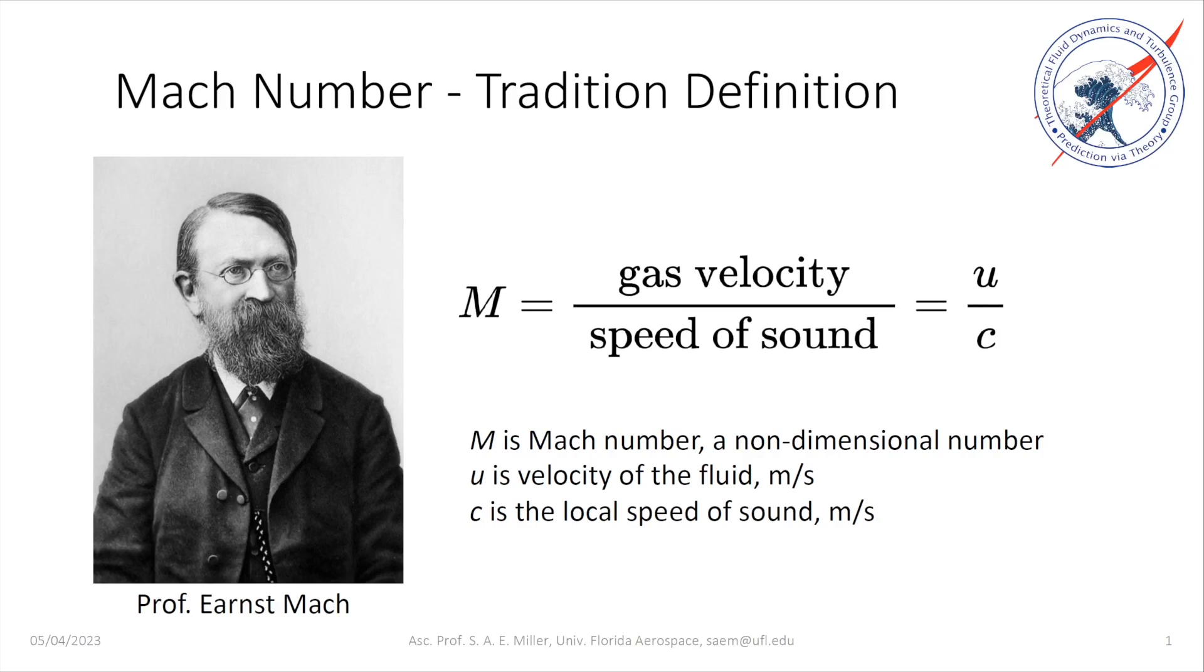The Mach number is the most popular non-dimensional number in aerospace engineering and fluid dynamics, especially for high-speed compressible flow. Often it is written as M for Mach number and it's the ratio of the local velocity of the fluid, that is its magnitude, divided by the local speed of sound.